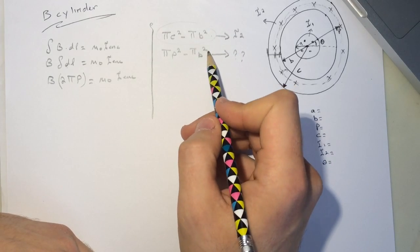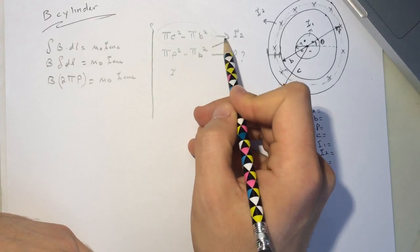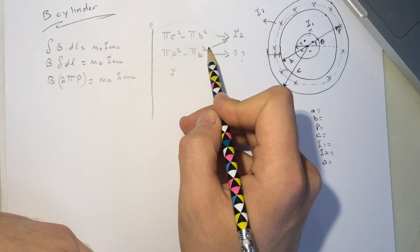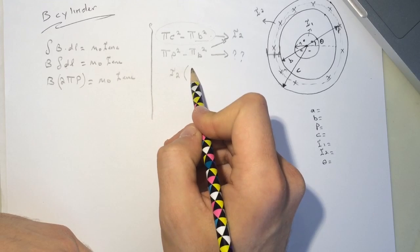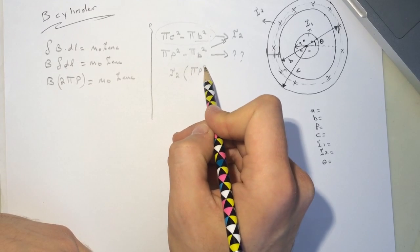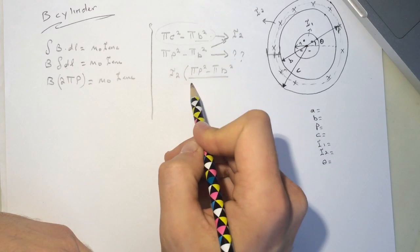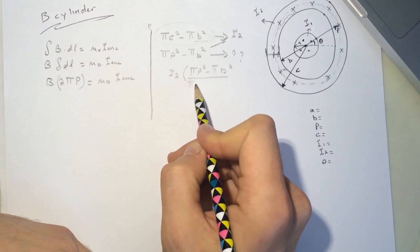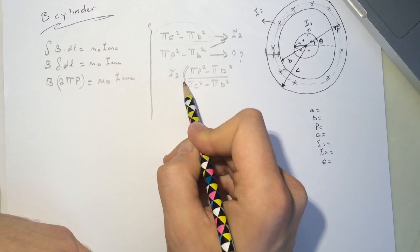Alright, so we do the ratio thing. So it's now this times this divided by this. So it's i2 will be equal to pi p squared minus pi b squared divided by pi c squared minus pi b squared.